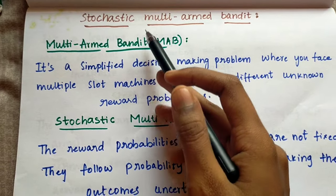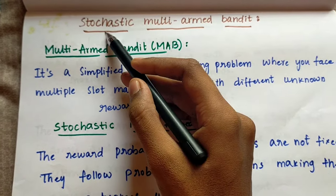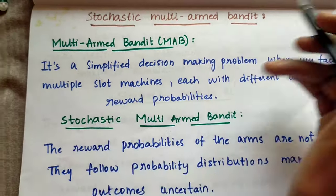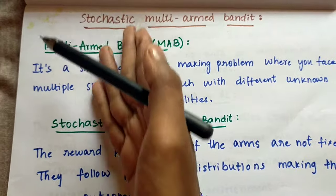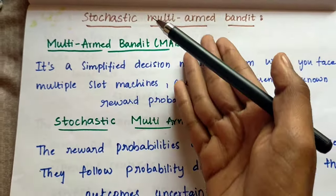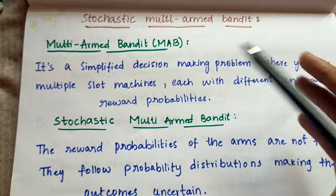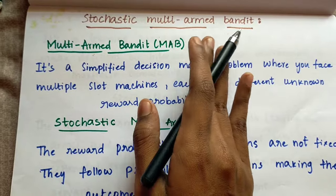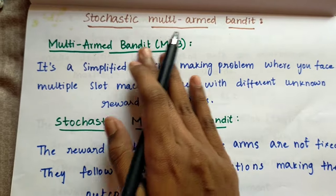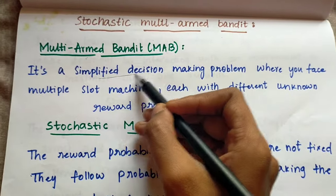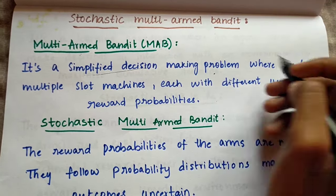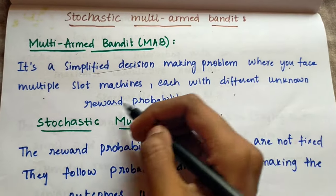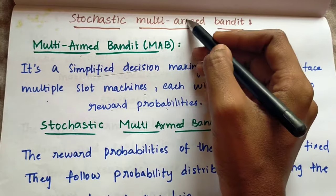In this video we'll see what is stochastic multi-armed bandit. We'll split the terms: stochastic, multi-armed, and bandit. First, we'll see what is multi-armed bandit — MAB in short form. It is a simplified decision making problem where you face multiple slot machines, each with different unknown reward probabilities.